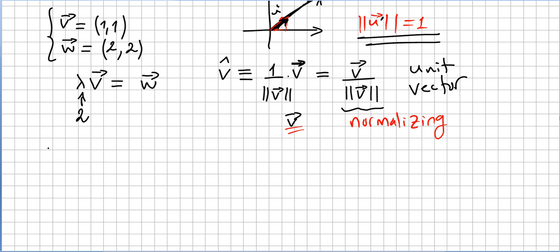Now, if you are asked to prove that v hat is a unit vector, well, you just calculate v hat dot v hat. So v hat dot v hat is v over the norm of v times v over the norm of v.